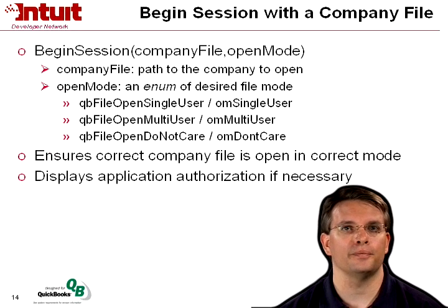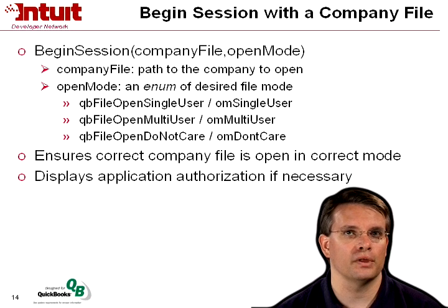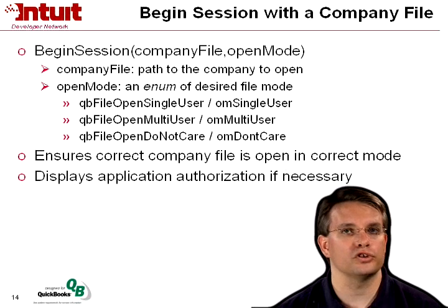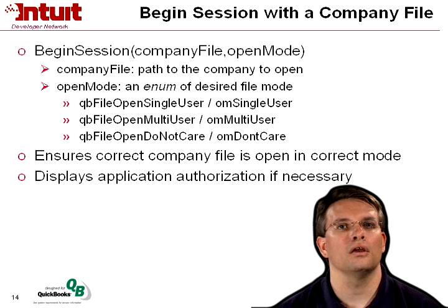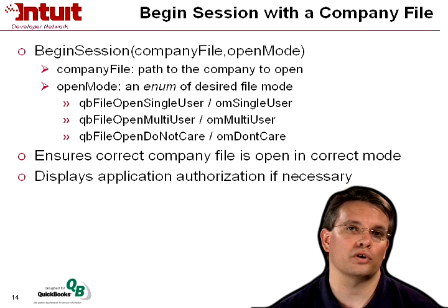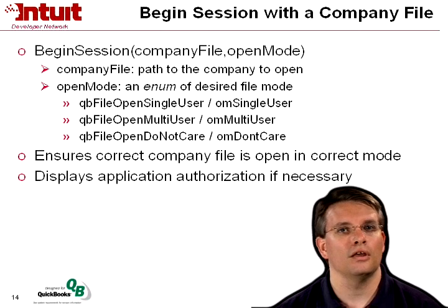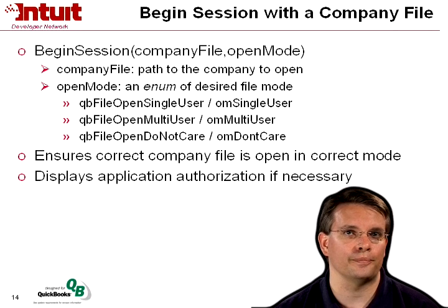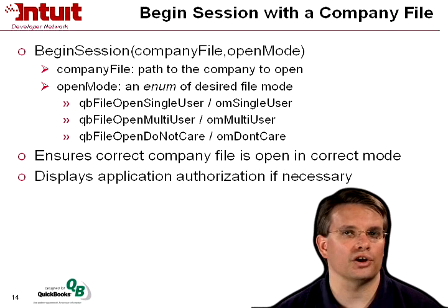Then you're ready to begin a session with a particular company file. The API is very simple — you call Begin Session, providing a path to a company file and the mode with which you want to open that file. The company file can be a path, or it can be an empty string if you just want to use the company file currently open in the QuickBooks UI. If your application is going to connect to QuickBooks in the background, then you do need to provide that company file path. Your open mode is straightforward: if you want single user mode — some requests, such as inventory adjustments, require single user mode — otherwise you can be in multi-user mode, or you can indicate that you don't care what mode it's open in. QuickBooks can only have one company file open at any given time, and it will display that authorization dialog to the user if necessary.